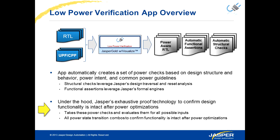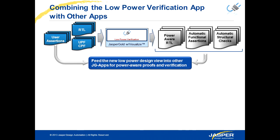Together with that, you can use Jasper formal exhaustive proof to ensure that the power architecture itself did not break any of the design functionality. Together with the RTL and the UPF, you may also use user-defined assertions that can be reused from previous verification that you have done, or you can create more on the fly. And you can use these together with our formal property verification app.